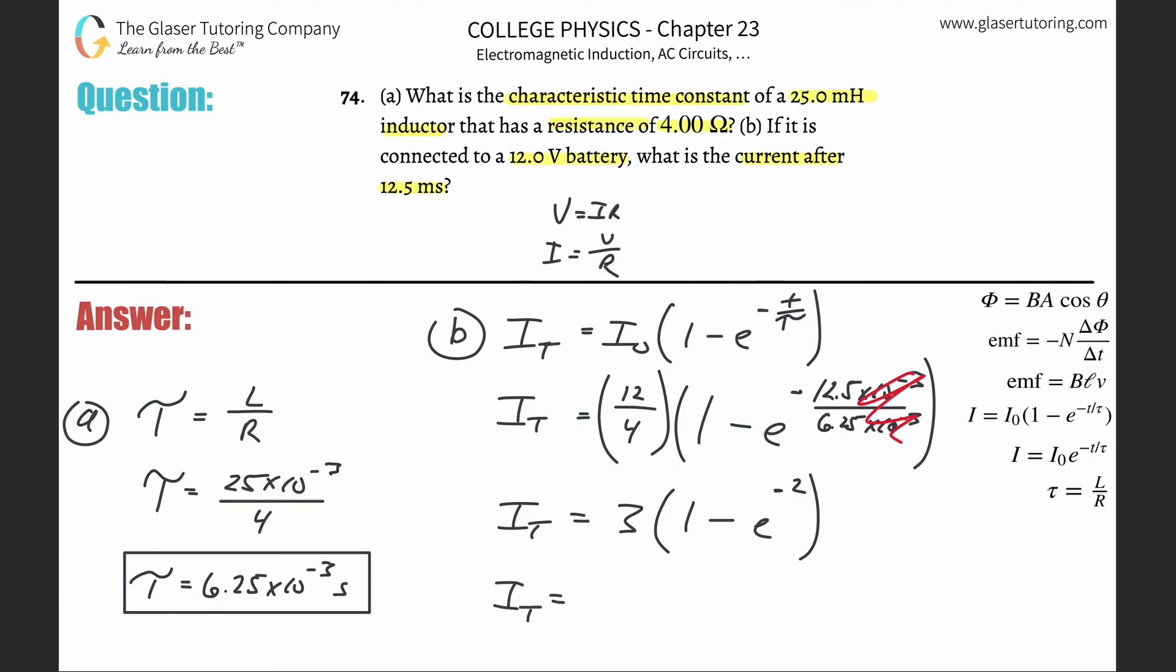Okay. And let's see what we get. So this is going to be three times one. Careful with your parentheses. One minus E. And I did the wrong E. Whoops. E raised to the minus two. All right, so this will be about 2.59 amps. And that's that.